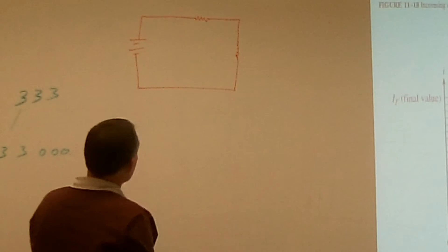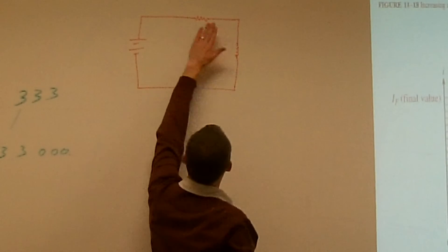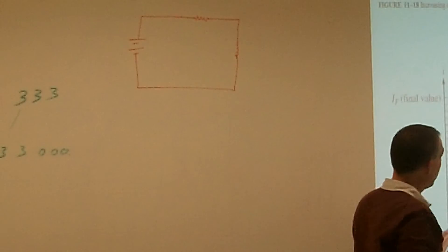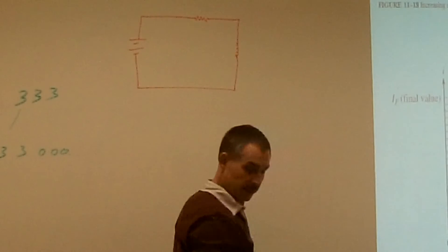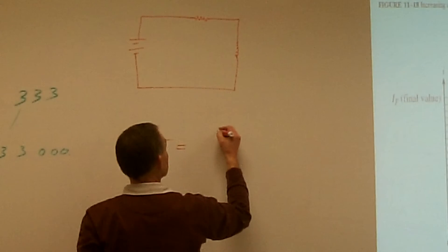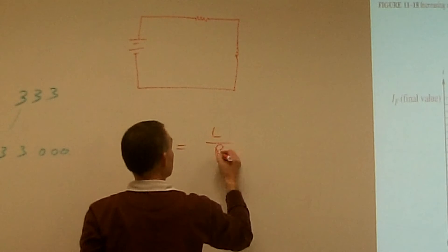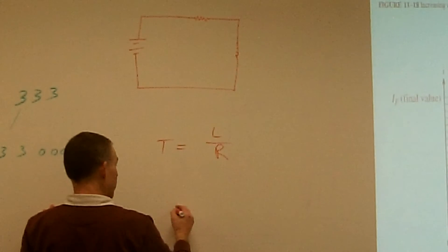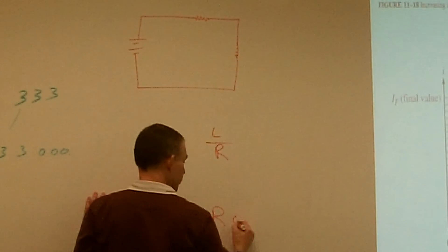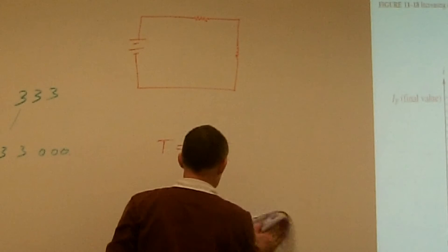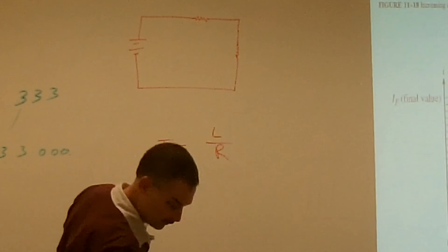An RL circuit actually has a time constant, just like we did with our capacitors. Our time constant is equal to L over R - our inductance over our resistance. Remember our time constant for a capacitor was T equals R times C; it's just the opposite with an inductor - our time constant is our inductance over our resistance.